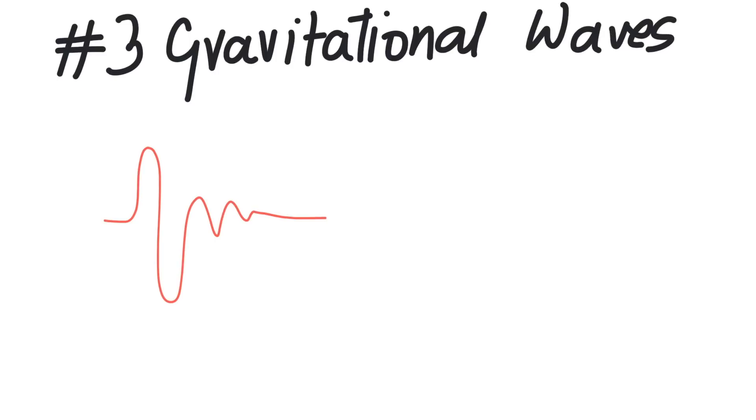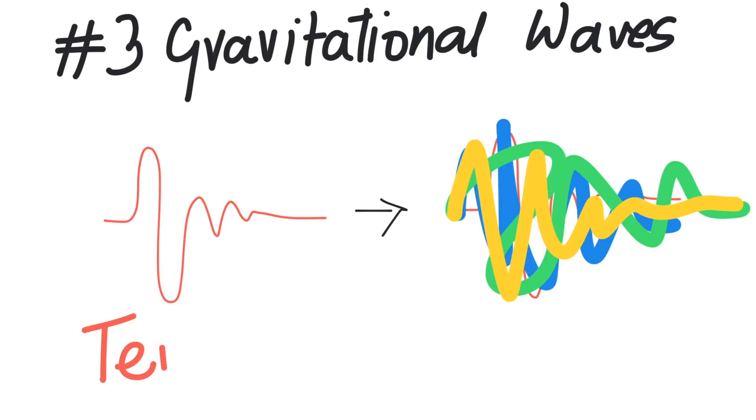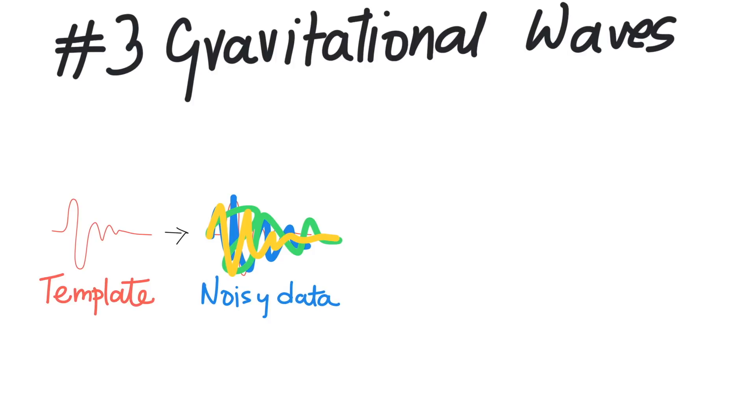Number three: Gravitational wave detection. Matched filtering is a technique used to detect gravitational wave signals. A template, which is the expected signal, is correlated with noisy data to detect a gravitational event. This could be a black hole merger.